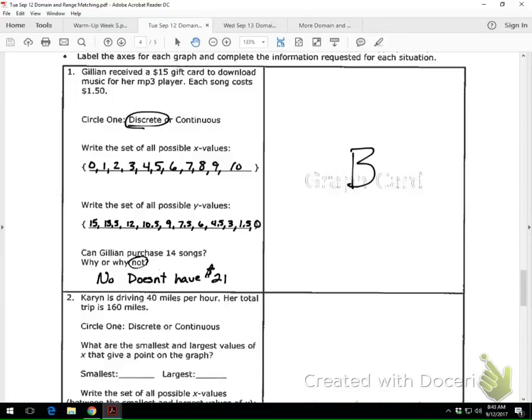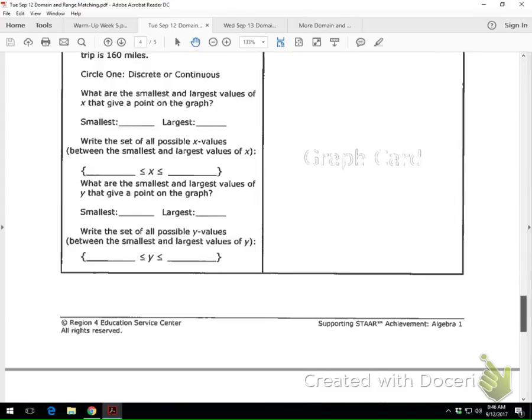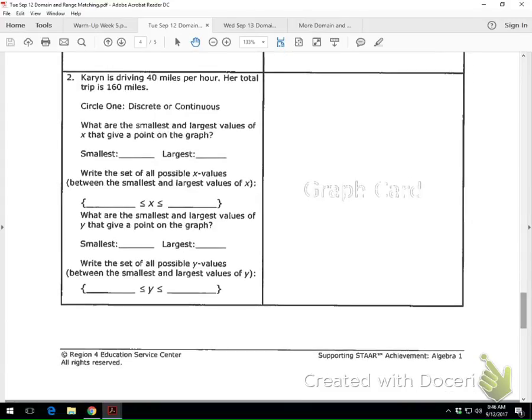Alright, so. Did we fix our problem from going up to going down? Okay. Alright, let's look at number two. Okay, it says, Karen is driving 40 miles per hour. Her total trip is 160 miles. Discrete or continuous? Continuous. What graph? D. Perfect. Graph D.